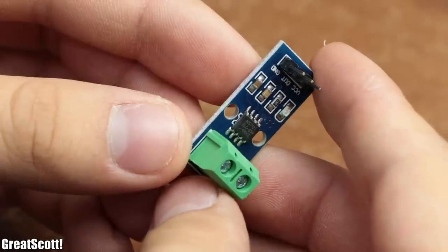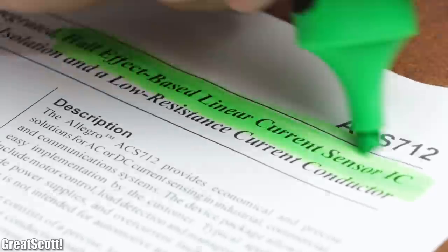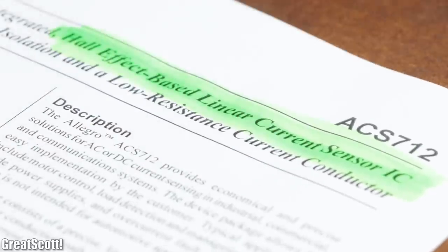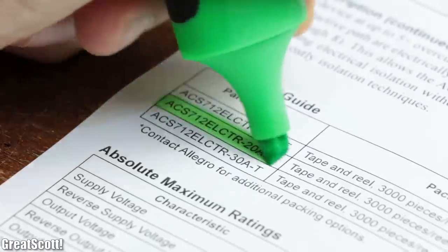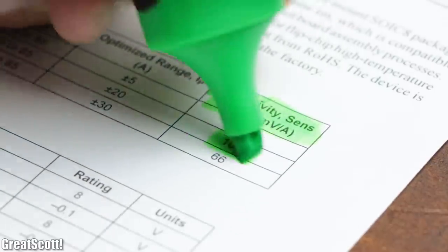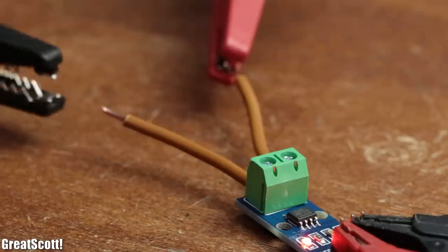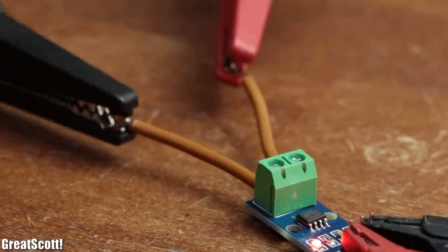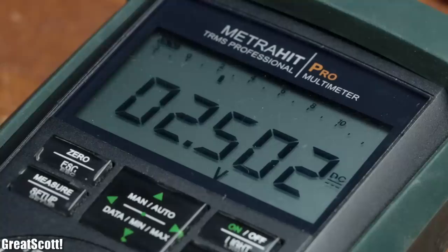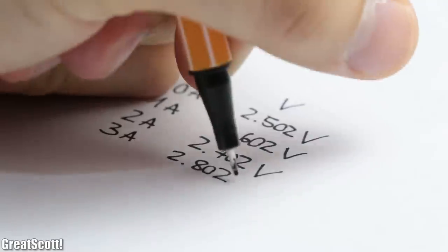For the current measuring I will be using an ACS712 IC, which is a Hall effect based linear current sensor. I went with the 20 amp version, which features a sensitivity of 100 millivolts per amp. That means that once we power the IC and connect a power source to its terminals, we can measure a voltage on its output terminal of around 2.502 volts at 0 amps, 2.602 volts at 1 amp, 2.702 volts at 2 amps and so on and on.